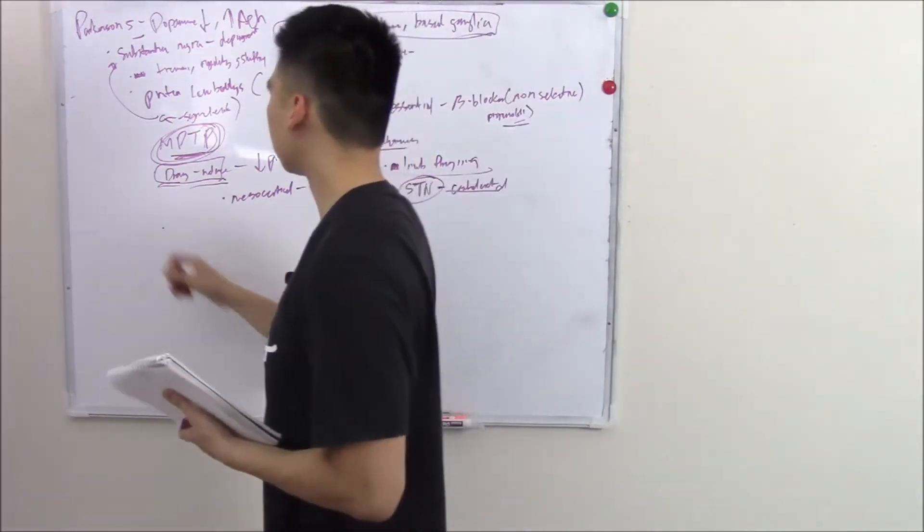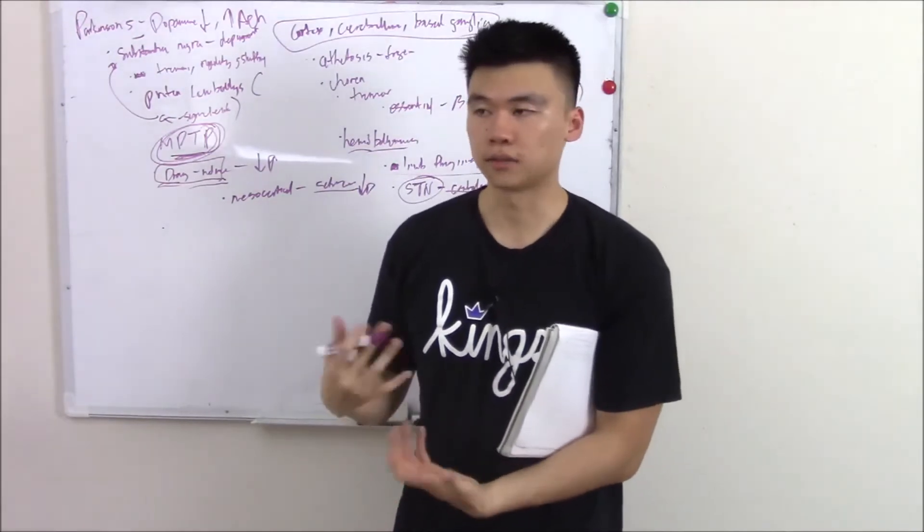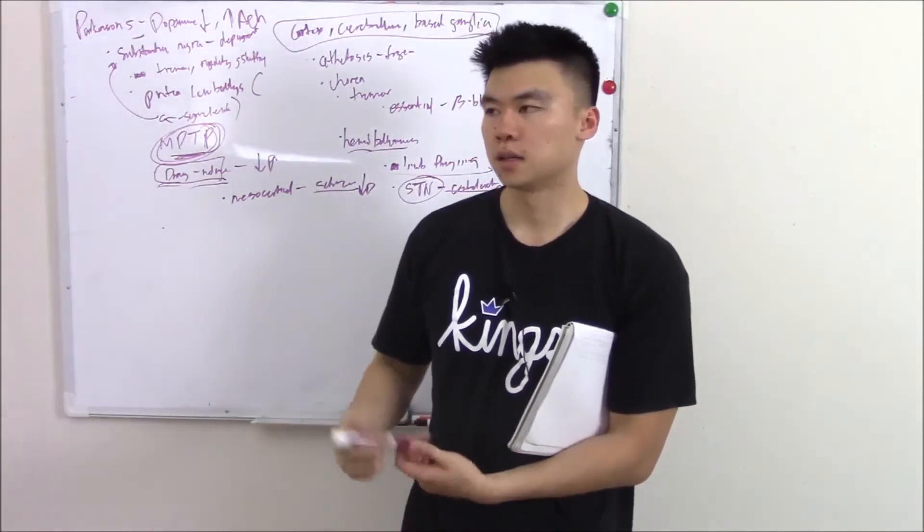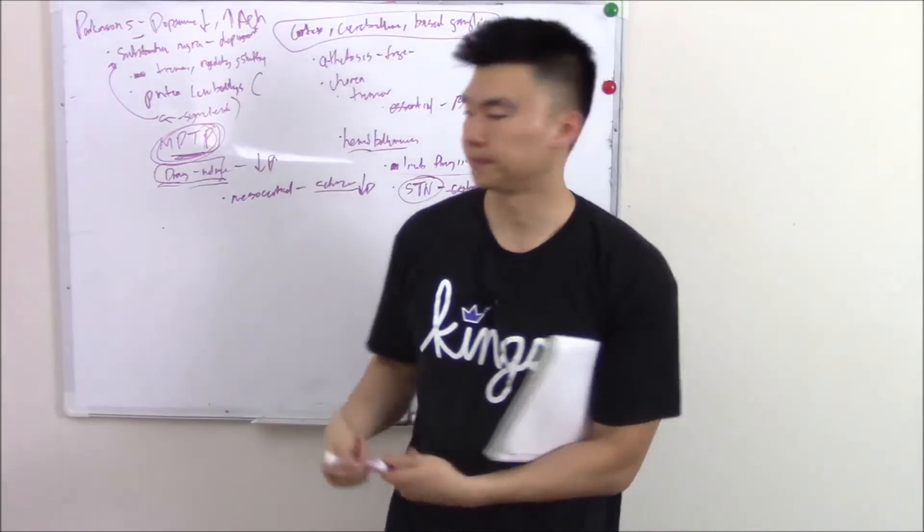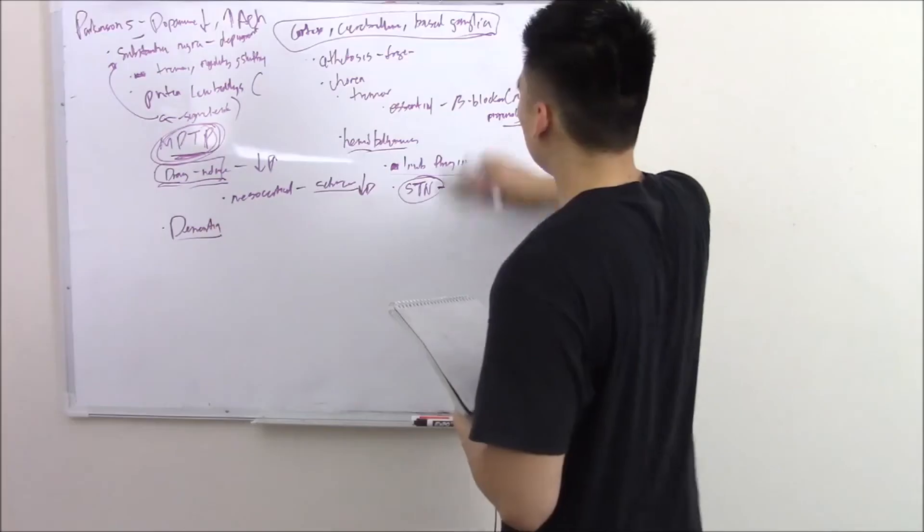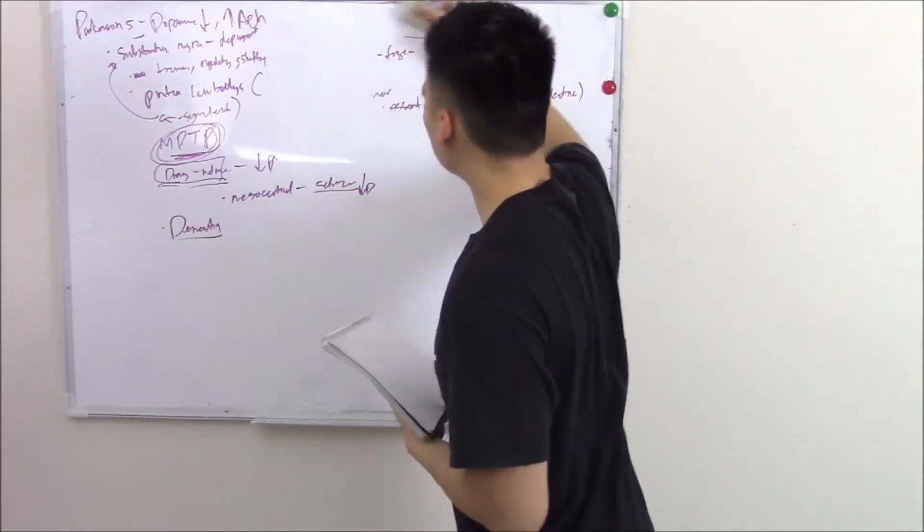Last thing you should know, Parkinson's, once it deposits in your substantia nigra, can also destroy other areas of your brain and cause eventual dementia. Dementia comes a little later. The movement disorders come first, but dementia goes together with Parkinson's. There's no cure for Parkinson's, unfortunately. However, we can give drugs that kind of reduce its effects.